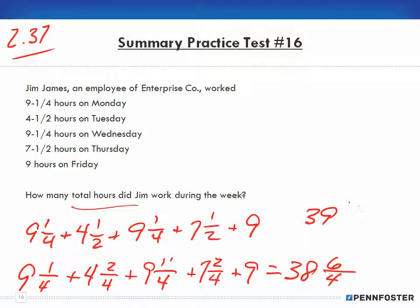So now our 38 becomes 39, and I'm left with 2 over 4—that's 2 fourths. I reduce that: 2 into 2 goes once and 2 into 4 goes 2 times, so I have 39 and a half. That's the total number of hours that were worked during the week.